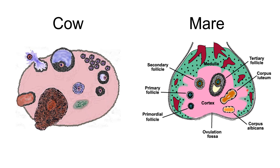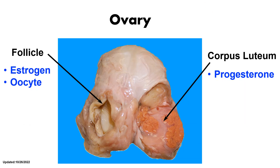On the outside of the mare's ovary, we have the blood vessels present in the medulla. For the cow, we can see follicles in various stages of development — primary, secondary, and tertiary follicles — as well as an ovulated or ruptured follicle that will later develop into the corpus hemorrhagicum, corpus luteum, and corpus albicans. This is the ovary of the mare, showing the follicles and corpus luteum located in the cortex within the ovary. The corpus luteum is responsible for the production of progesterone, and the follicles are responsible for the production of estrogen and the development of the oocyte.